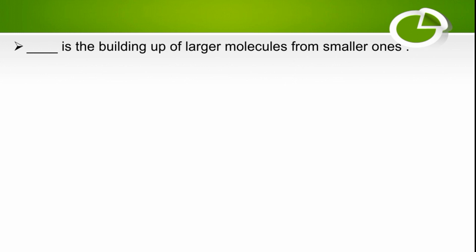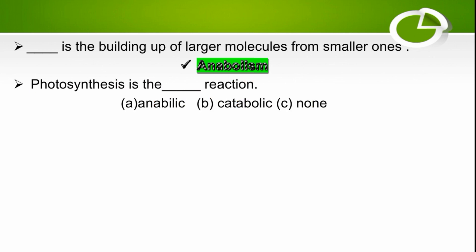Anabolism is the building of larger molecules from smaller ones. Photosynthesis is an anabolic reaction because larger molecules are formed from smaller molecules, so the right option is anabolic.